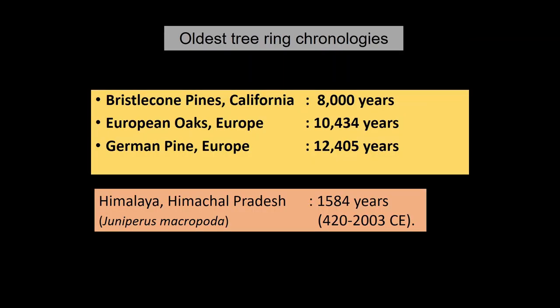Some of the oldest chronologies constructed in the world include bristlecone pine trees from California, which give a tree ring chronology 8000 years old. European oak trees are used to construct chronologies covering more than 10,000 years. German pine shows a chronology of 12,000 years. In the Indian region, one of the longest known chronologies spans from 420 to 2003 CE, representing around 1500 years.